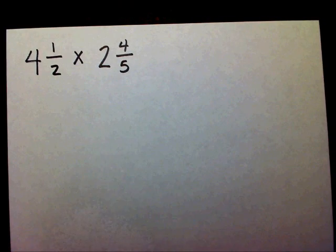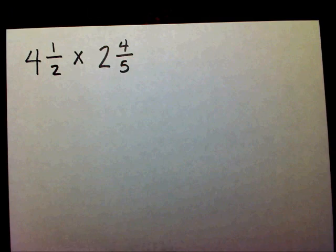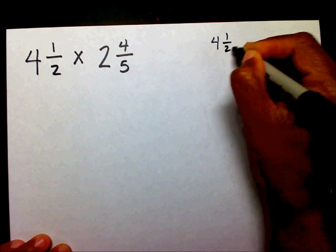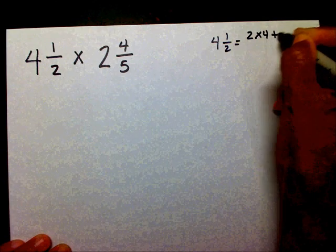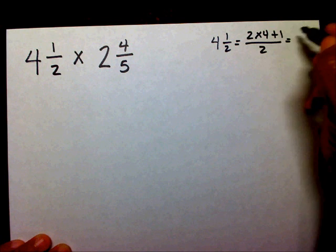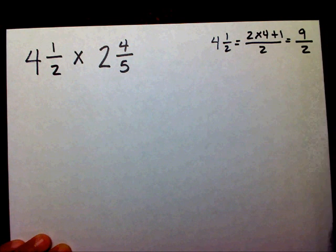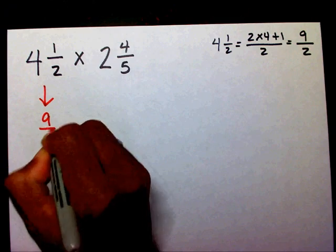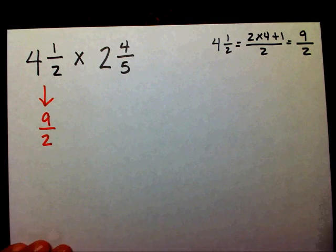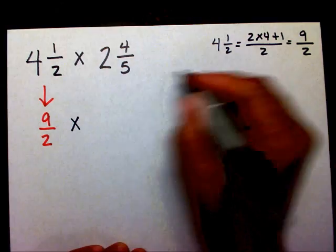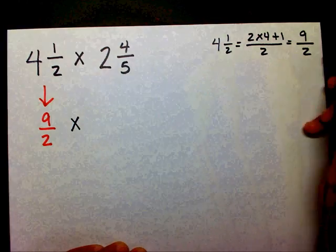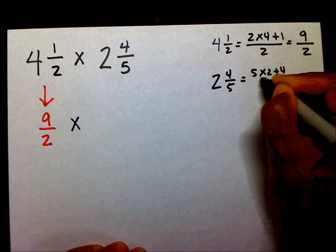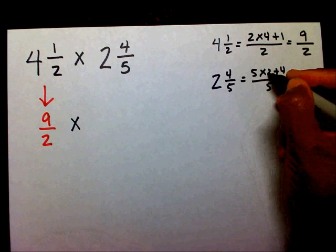We need to change the mixed numbers into improper fractions. Four and one-half equals two times four plus one over two. Two times four is eight plus one is nine over two. So instead of four and a half, I can write nine over two. Now I need to take two and four-fifths — that equals five times two plus four over five. Five times two is ten plus four is fourteen-fifths.